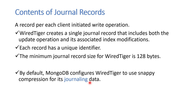Regarding the content of journal records: one record per client-initiated write operation is created, and it contains all the update operations — what data has changed in the database and what it is supposed to do. It also maintains indexing information. Each record has a unique identifier, the minimum size of a journal record is 128 bytes, and by default it uses the snappy compression algorithm for compressing the journaling data.